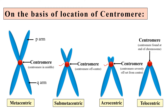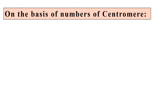The next type on the basis of centromere location is the telocentric chromosome. Here the centromere is at the very end of the chromosome, as you can see in the diagram. Generally in humans there is no telocentric chromosome.